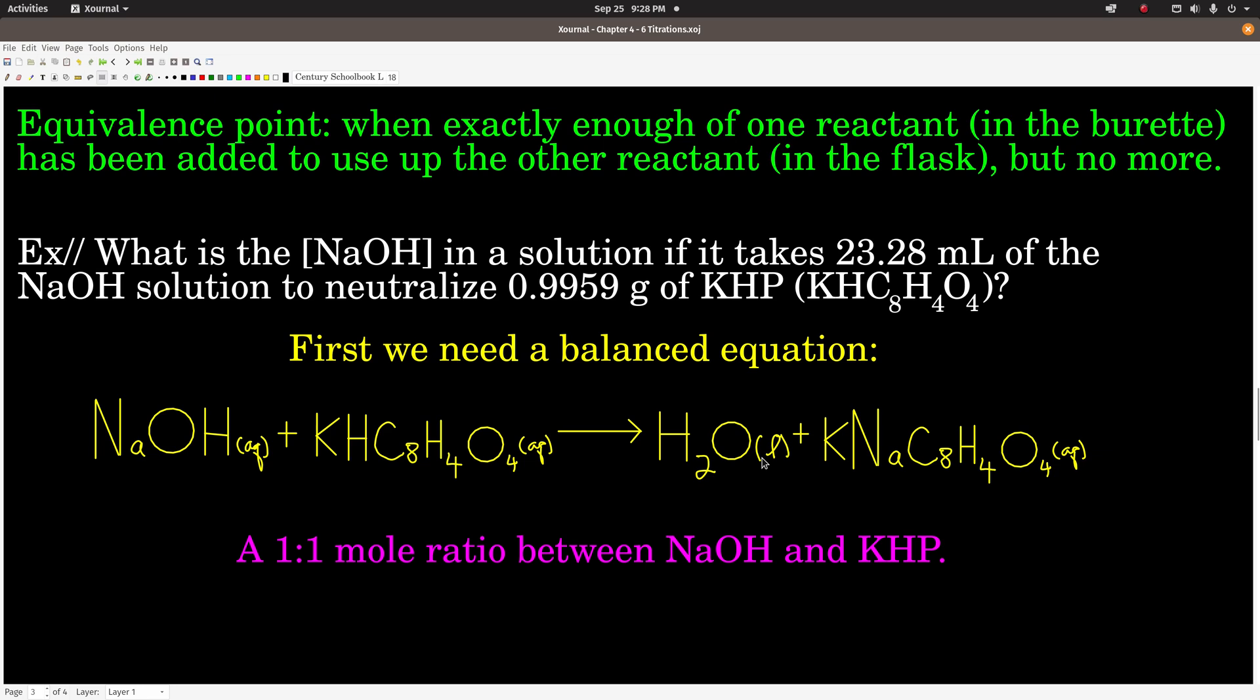Remember, if you know the volume and molarity, then you know the moles. Also, if you know the grams and the molar mass, you know the moles. So here's an example. This is a pretty typical titration that we would do in the lab. The idea is we want to find the concentration or molarity of sodium hydroxide in a solution if it takes 23.28 milliliters of the NaOH solution to neutralize 0.9959 grams of KHP (KHC8H4O4).